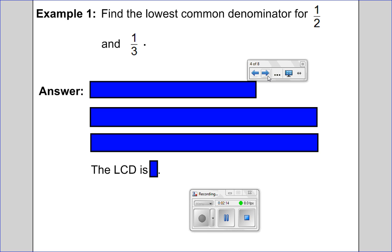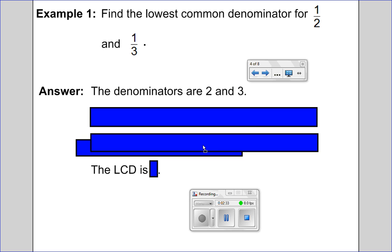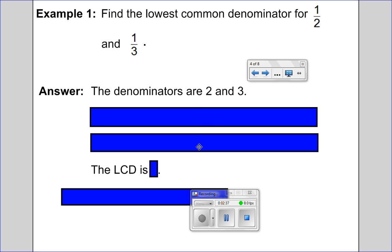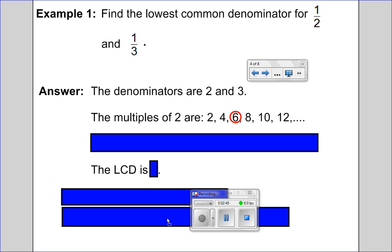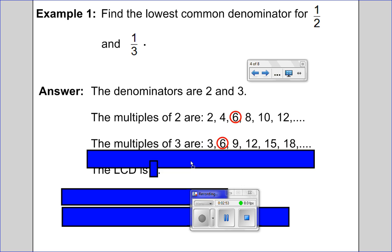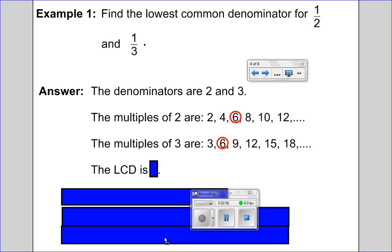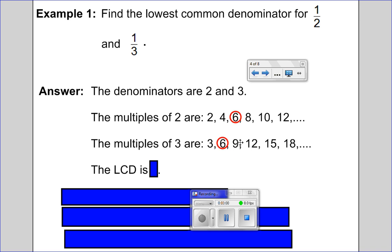Here's an example: find the lowest common denominator for one half and one third. Put the video on pause so you can try working out the solution. When you hit play, I'll reveal the answer. All right, let's see how you did. To start off, the denominators are two and three. It's important that we recognize that the denominators are the so-called bottom numbers in a pair of fractions. We generate multiples for two and three. When we do that, we find that the smallest number that appears in both lists is six, meaning that the LCD is six.